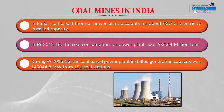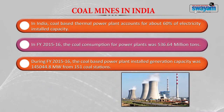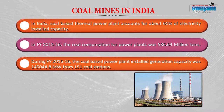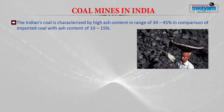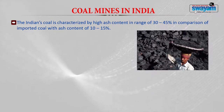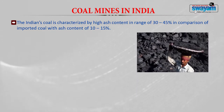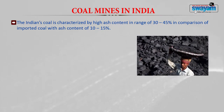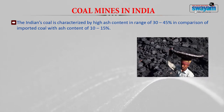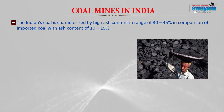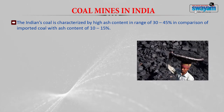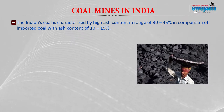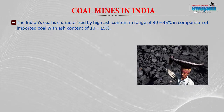In financial year 2015-16, the coal-based power plant installed generation capacity was 1,45,044 megawatt from 151 coal stations. In recent years, the number of thermal power plants and installed capacity may have further increased. India's coal is characterized by high ash content in the range of 30 to 45 percent. Imported coal, by comparison, has a lower ash content in the range of 10 to 15 percent, meaning imported coal produces less ash.